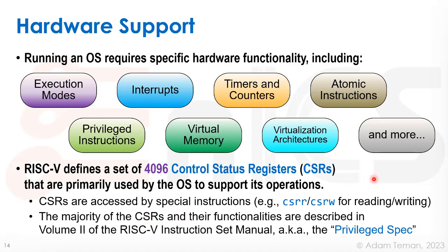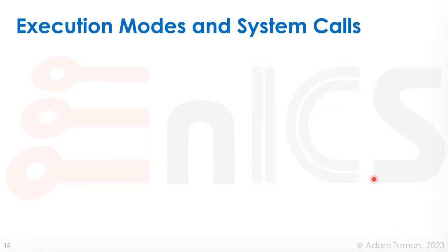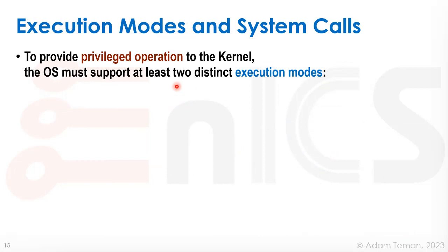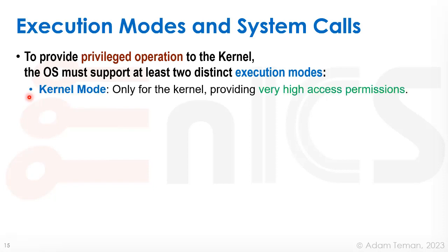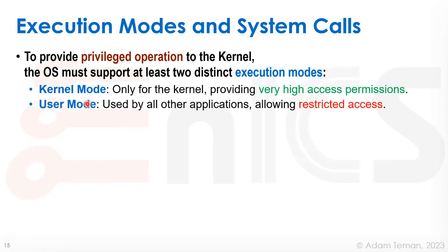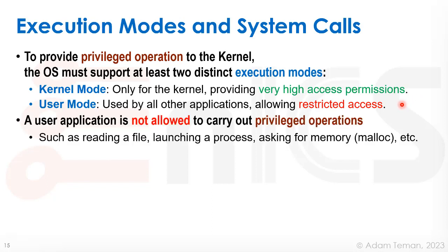What about execution modes and system calls? To provide privileged operation to the kernel, the operating system must support at least two distinct execution modes. The first is called kernel mode, where the kernel runs — it's only for the kernel and provides very high access permissions, allowing the kernel to do basically almost anything in the system. The second is user mode, used by all other applications, which has restricted access. This is how we differentiate between the kernel, which can do everything, and user applications, which can do a very limited amount.